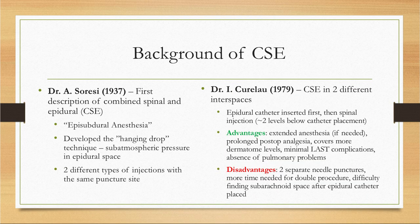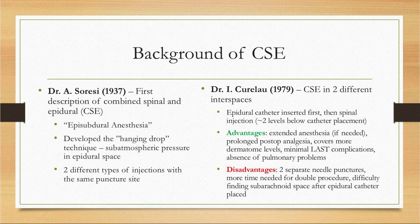CSE anesthesia was first described in 1937 by Dr. Cerisi, an Italian surgeon who injected medications in the subarachnoid and epidural space at the same time. He labeled this procedure episubdural anesthesia, which involved use of the same needle for both injections. He first advanced the needle into the epidural space using the hanging drop technique, which relies upon aspiration of a small volume of fluid as pressure at the tip decreases below atmospheric level upon entry into the epidural space. Dr. Cerisi concluded that episubdural anesthesia was one of the safest procedures, allowing perfect anesthesia, ideal relaxation, and elimination of basically all post-op pain and distress.